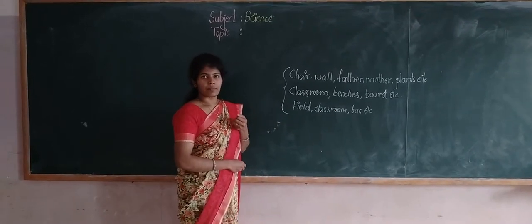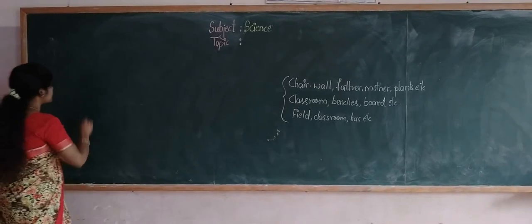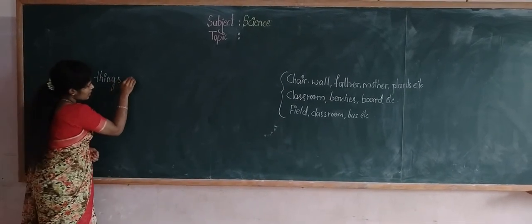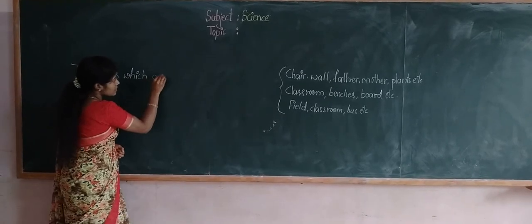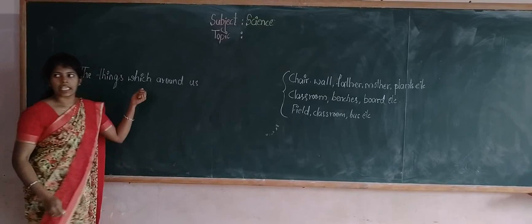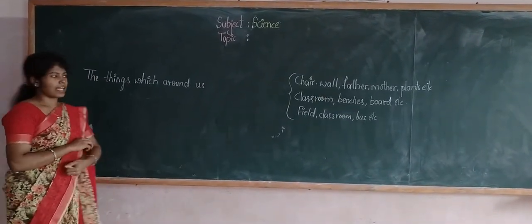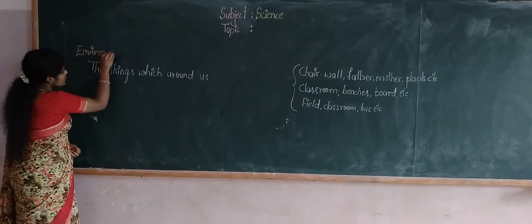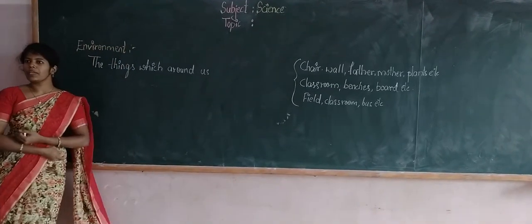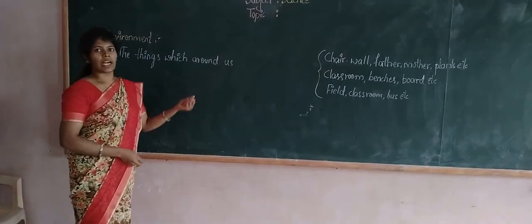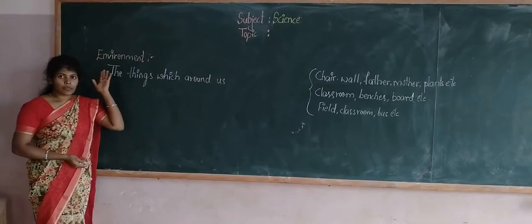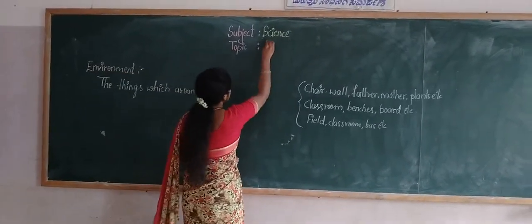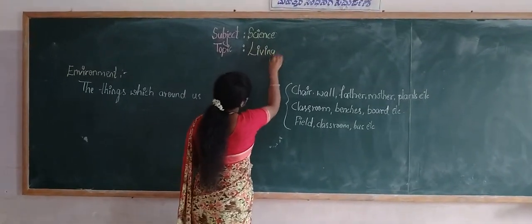How can we write this in statement form? The things which are around us we call as surroundings. What do you mean by environment? The things which are around us we call as environment. By using this beautiful environment, today we are going to learn the chapter Living World.